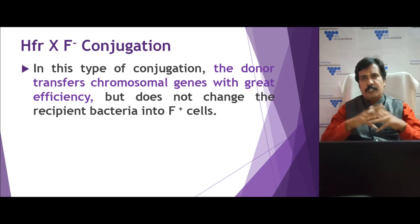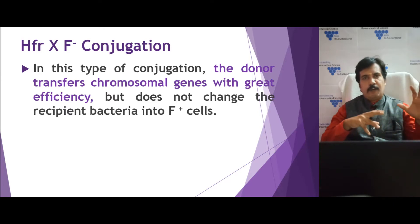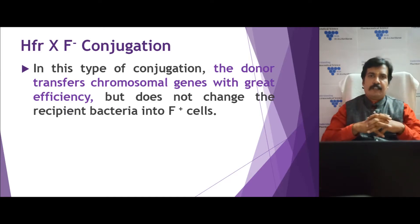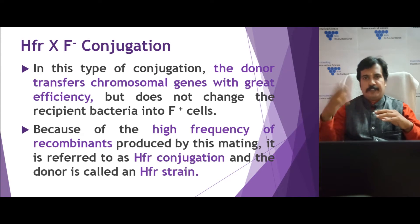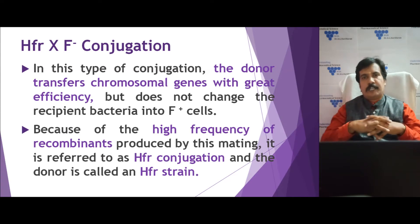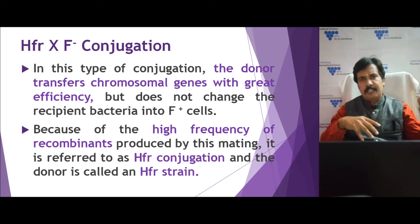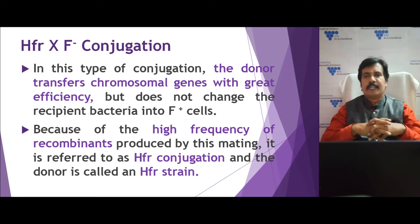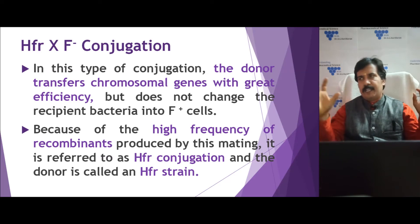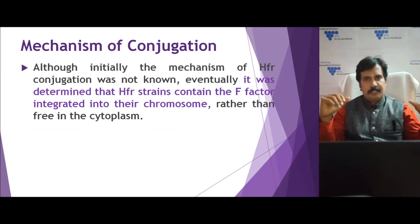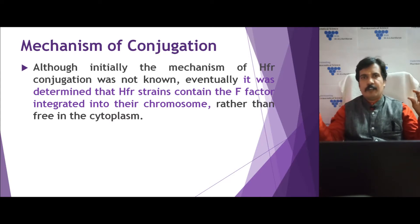In HFR into F minus conjugation, the donor cell is called an HFR cell because the fertility factor is generally present within the chromosome, and the genetic conjugation can happen at a very high frequency — hence we denote it as HFR. The rate of conjugation of HFR is very high compared to F plus into F minus conjugation.